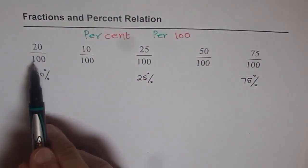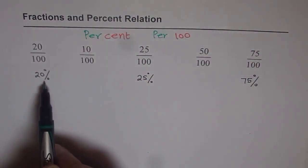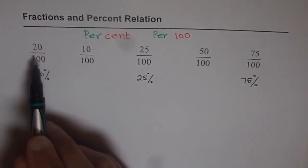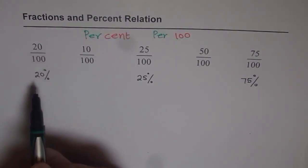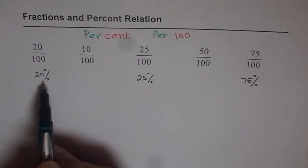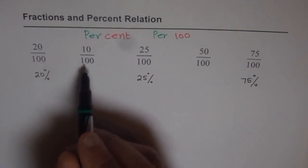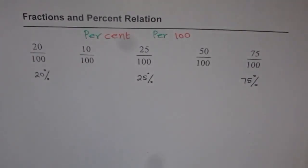So 25 per 100 is 25 percent. So 20 over 100 is 20 percent. Do you understand now? Now 10 over 100 will be 10 percent and 50 over 100 will be 50 percent. So that is how percent and fractions are related.